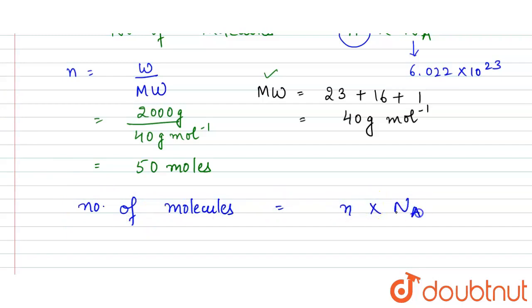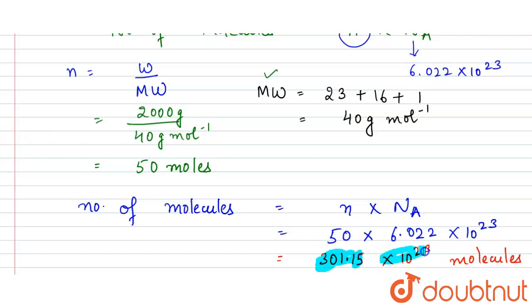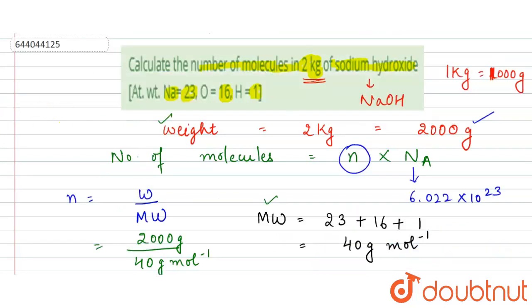So the number of molecules = 50 × 6.022 × 10²³, which gives us 301.15 × 10²³ molecules. This is our required answer.